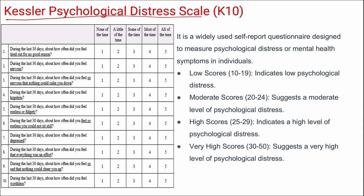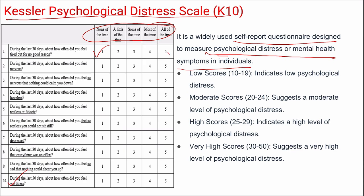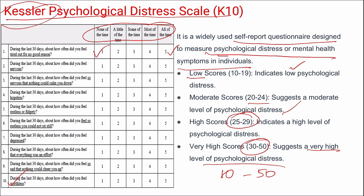Next is the Kessler Psychological Distress Scale or K10 scale — a widely used self-reported questionnaire to measure psychological distress. It has 10 questions scored on a 1 to 5 frequency scale, giving a total range of 10 to 50. Scores of 20–24 suggest moderate psychological distress, 25–29 high distress, and 30 and above up to 50 suggest a very high level of psychological distress.